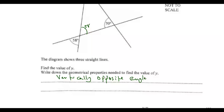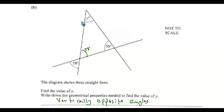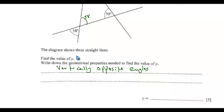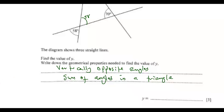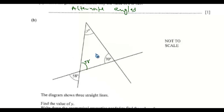Vertically opposite angles are equal. To get y you must know this. Since you have these two angles, it's easy to get the value of angle y. Another property that will make that possible is the sum of angles in a triangle.